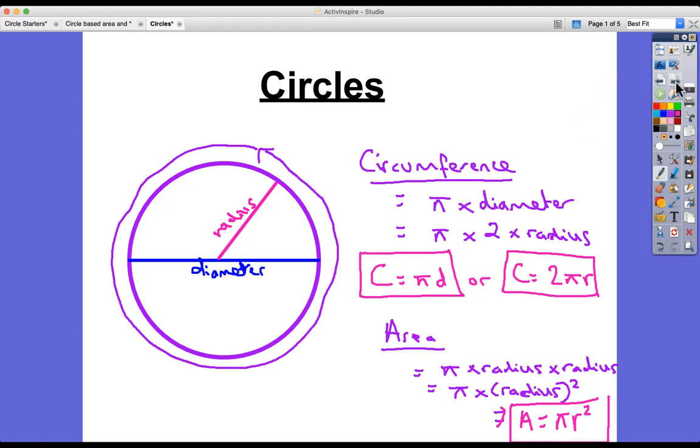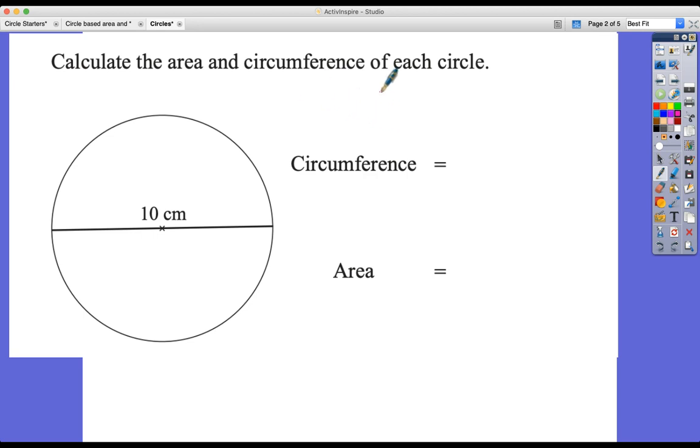Let's look at some examples. First, calculate the area and circumference of each of the circles. Circumference is πd, so in this case it's π times 10. We grab our calculator and use the pi button, times it by 10. We get 10π if we leave it exact, or to three significant figures we've got 31.4 centimeters.